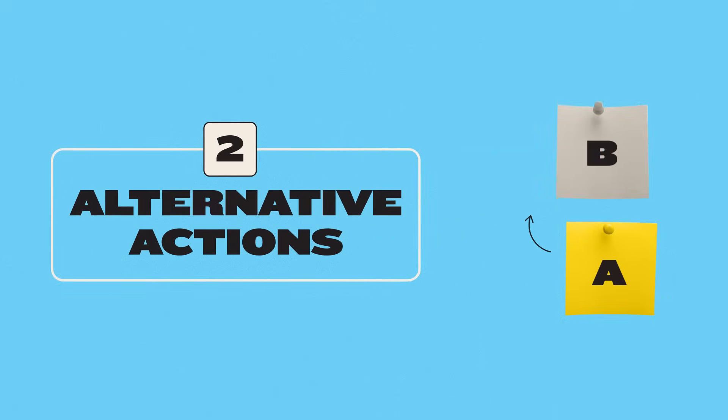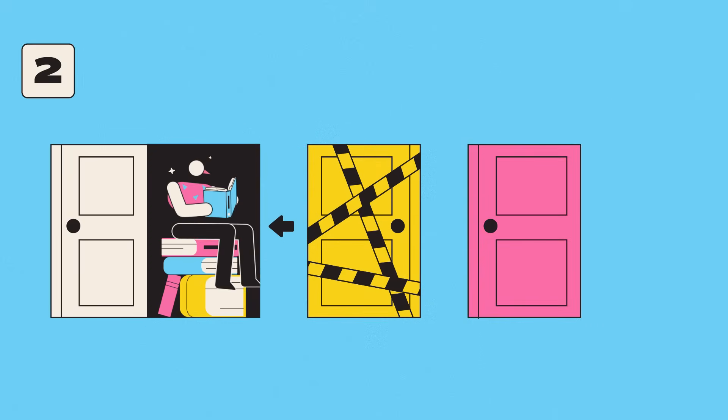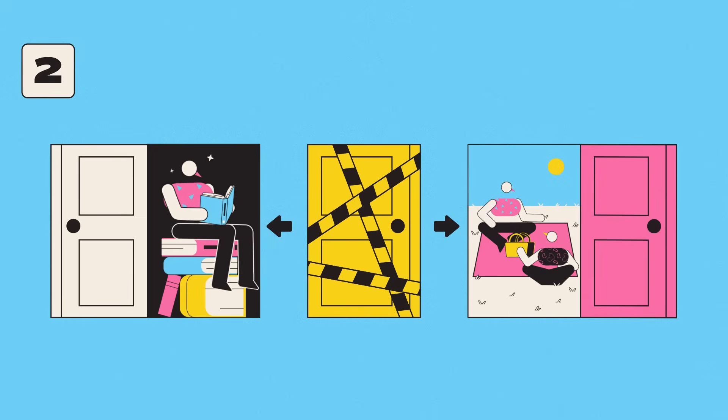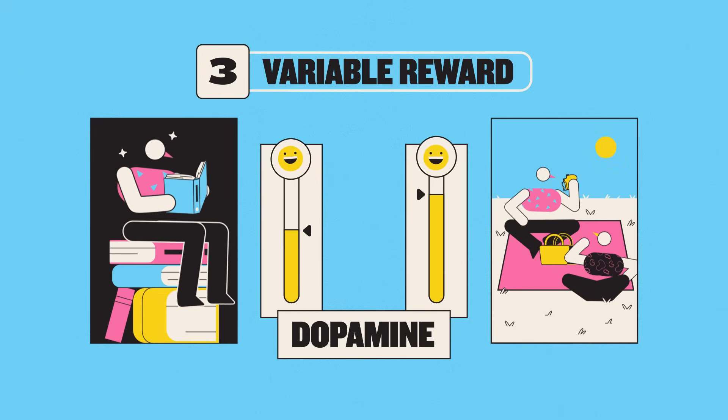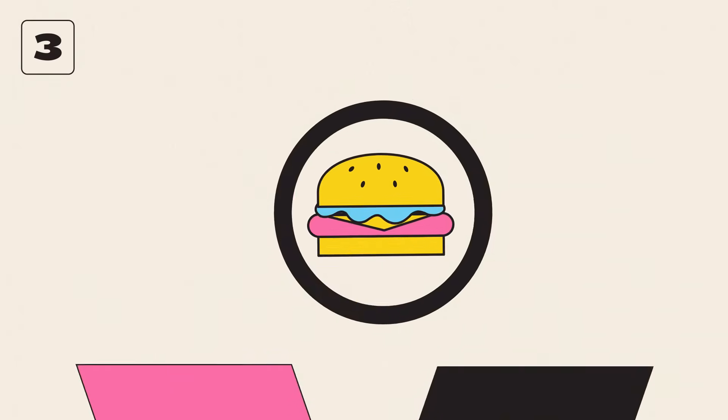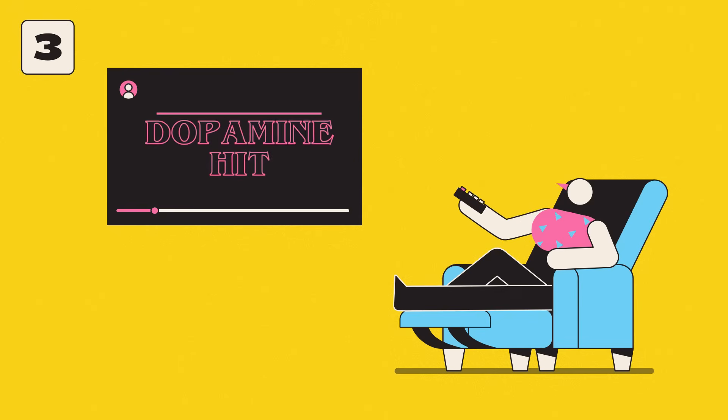Second, plan alternative actions. Try substituting something more wholesome, whether that's setting yourself a reading challenge or spending time offline with friends. This should provide its own variable rewards, and you can allow yourself others, including the occasional indulgence. A burger now and then won't kill you, and neither will the odd binge watch.